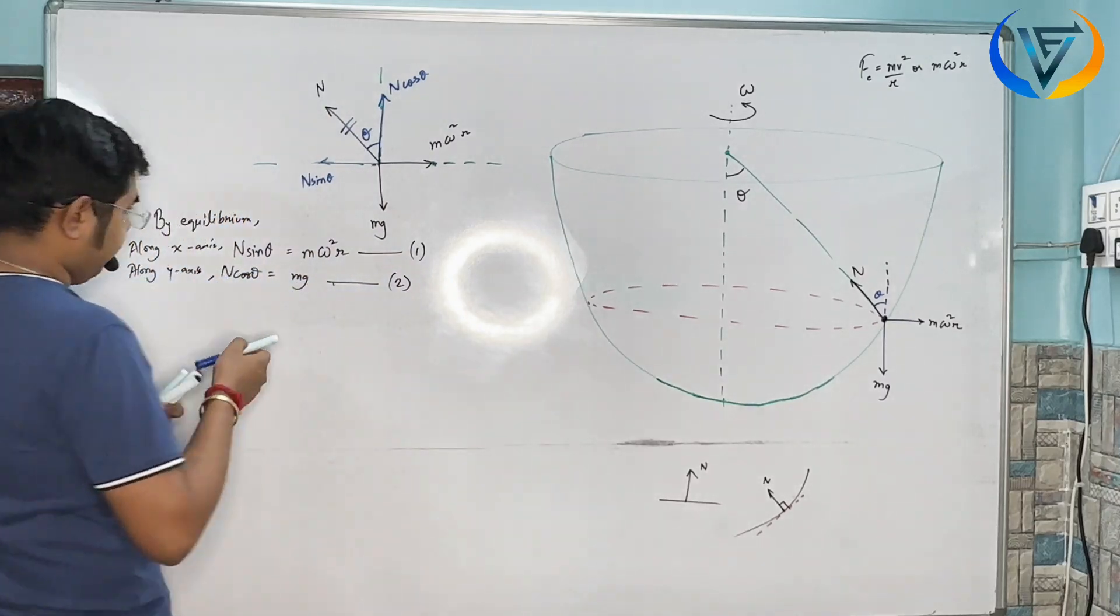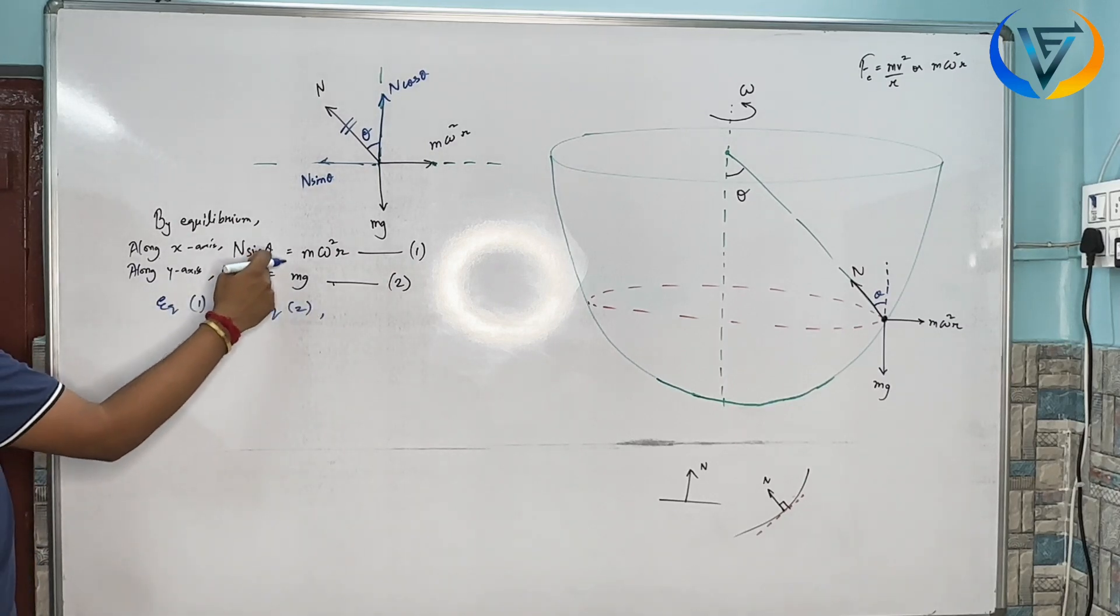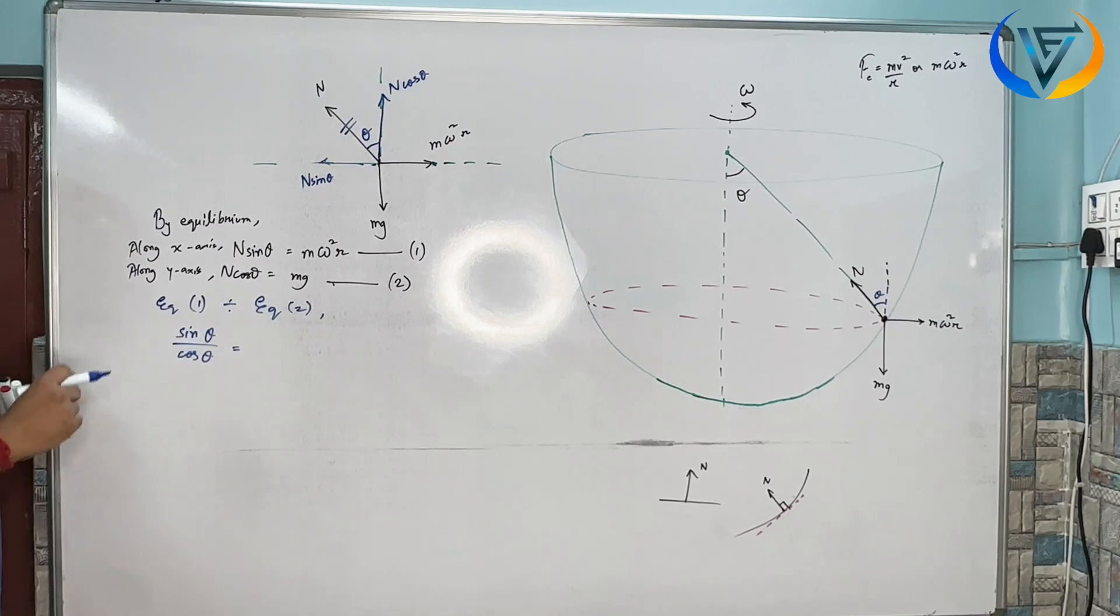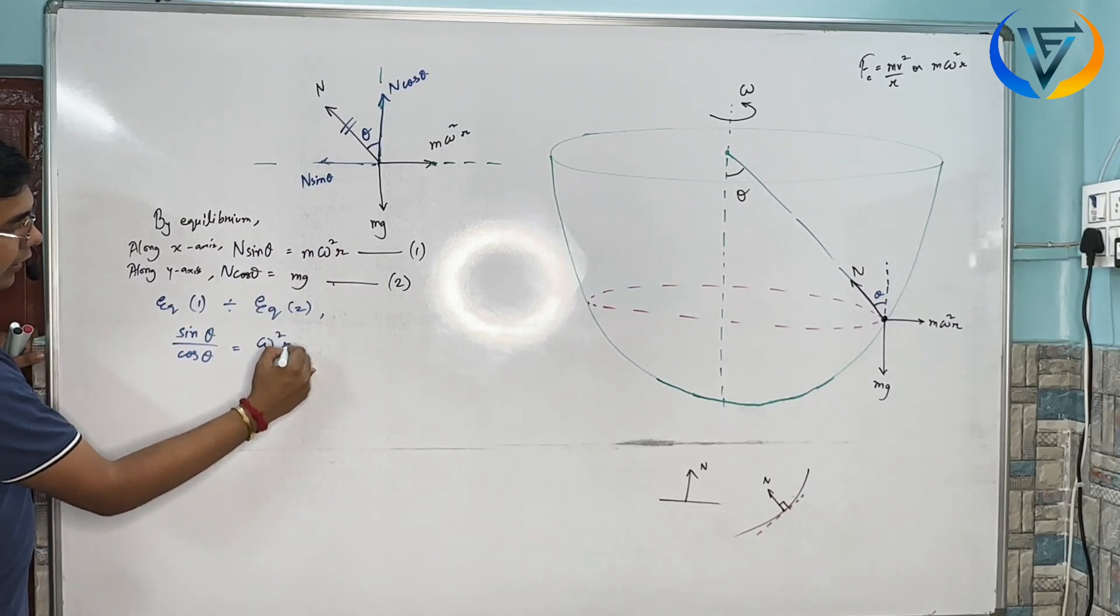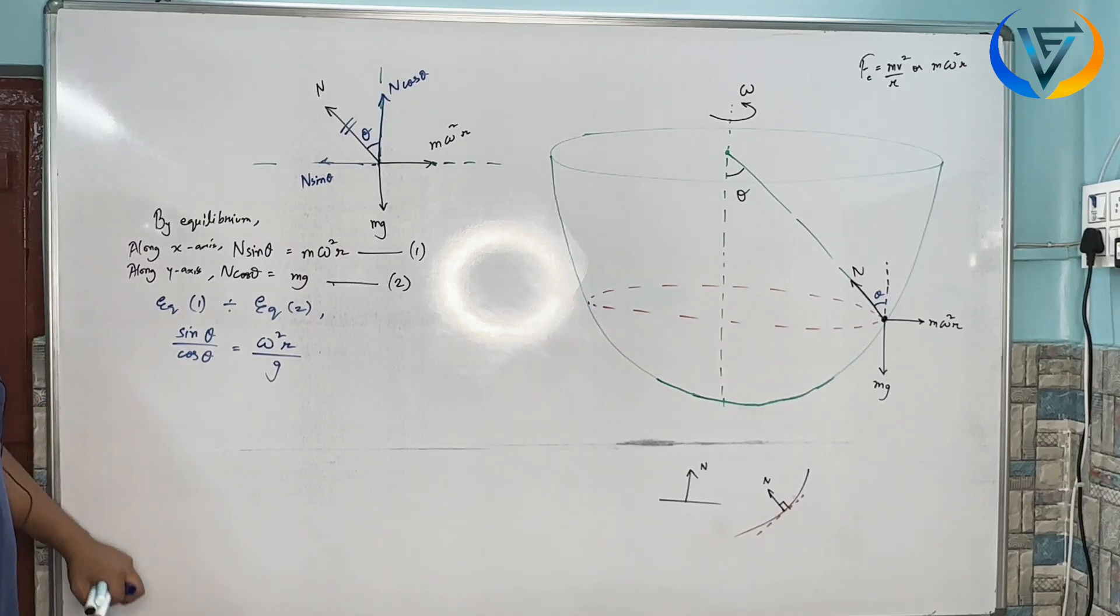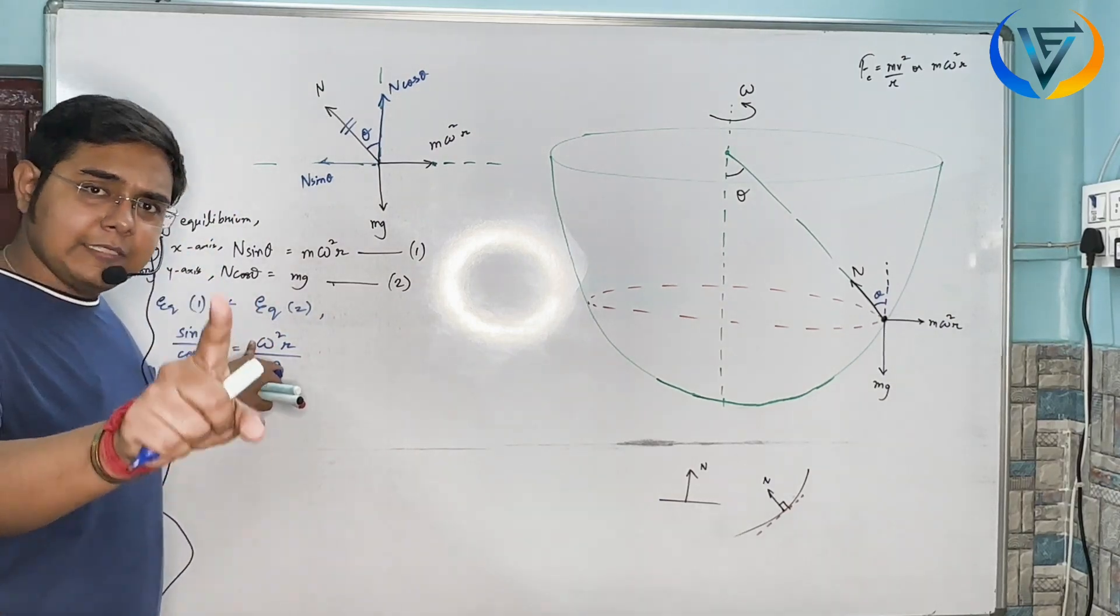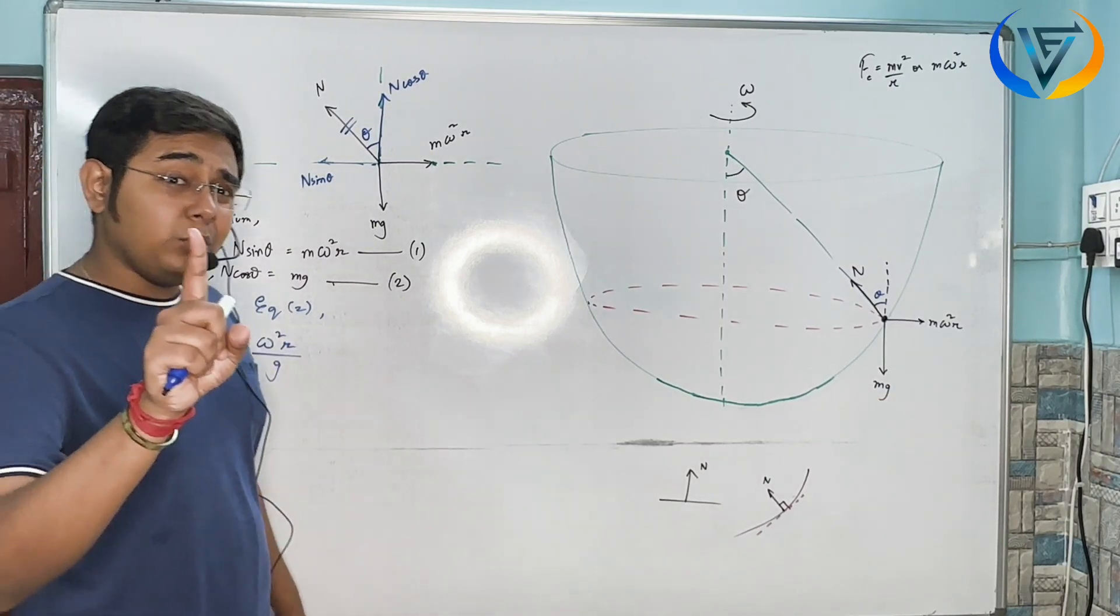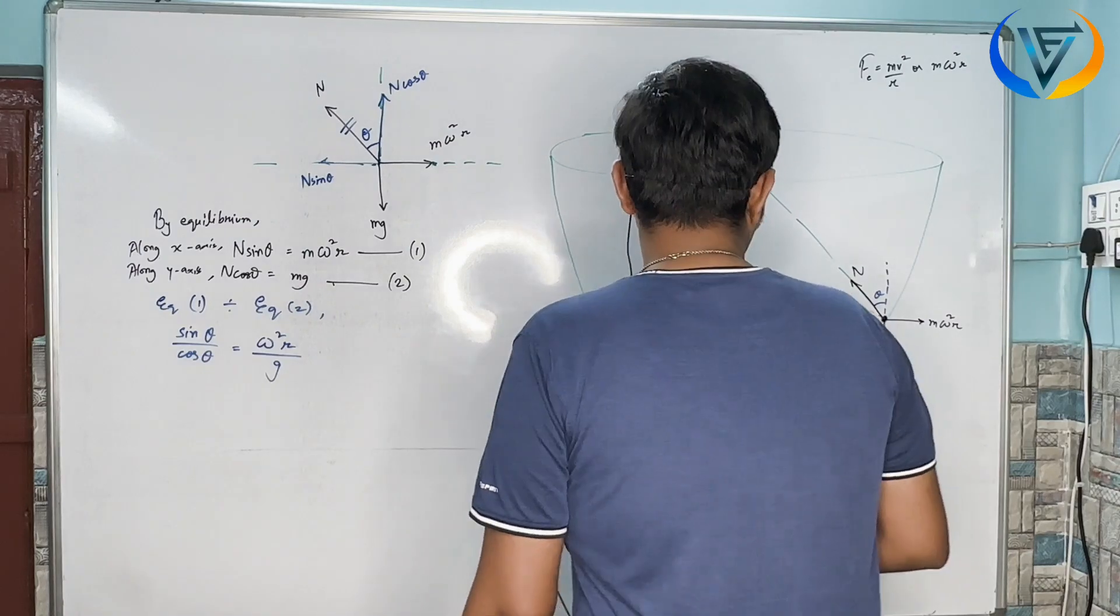Equation 1 divided by equation 2: sin theta by cos theta equals M omega square R divided by Mg. This simplifies to tan theta equals omega square R divided by g. But small r is the variable we need to express in terms of capital R.